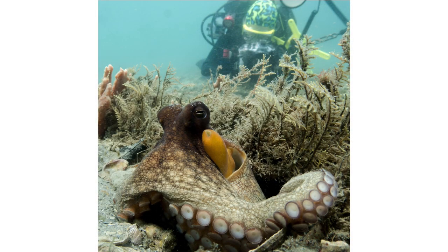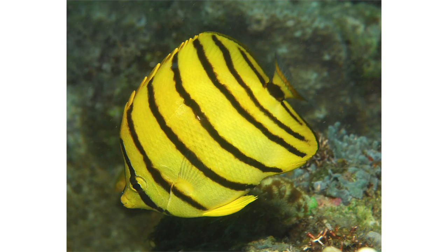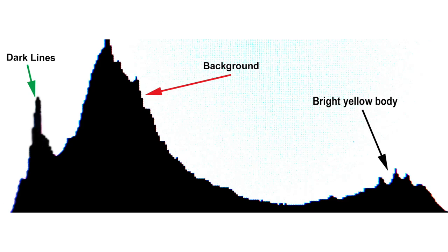Number three: there is no such thing as a perfect histogram. Different subjects and backgrounds are going to produce different appearing histograms, and different photographers have different photographic styles. In general, we like to see a well-balanced, even histogram with a good distribution of pixels to the right and left, showing decent contrast and balance. But there are exceptions. Here we have a bright yellow fish with dark black stripes on a darker background, so the histogram shows three different peaks: the dark stripes to the left, the darker background in a broader area to the left, and then the bright yellow body to the right.